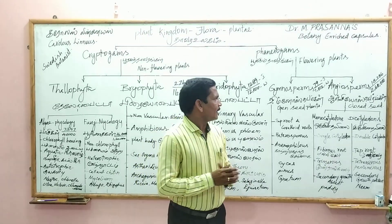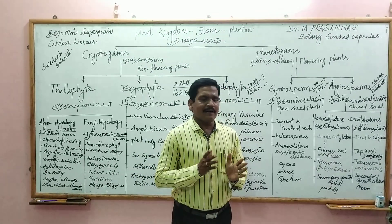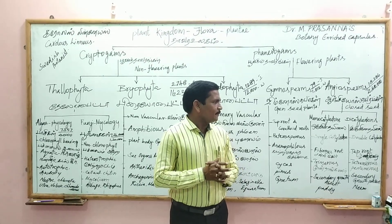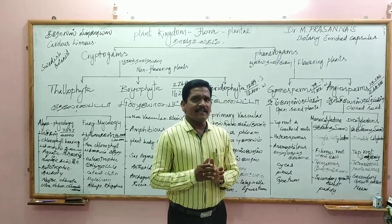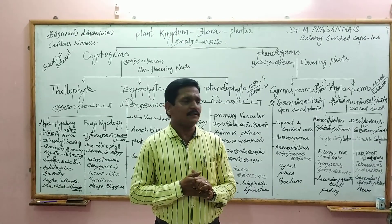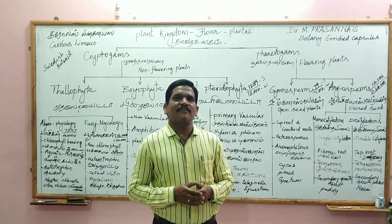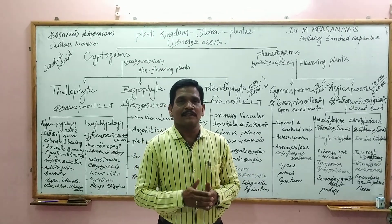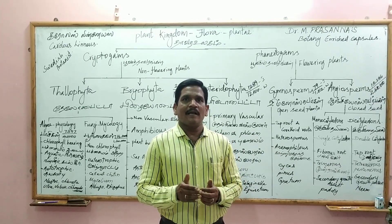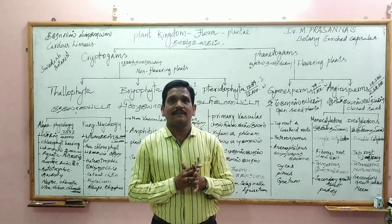The characters of dicotyledons are: two cotyledons are present, tap root system is present, tetramerous and pentamerous floral classes. Secondary growth is present because cambium is present. Examples include neem, Bougainvillea, and trees.